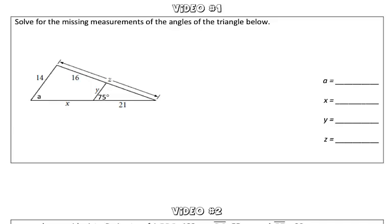In this problem, we are asked to solve for the missing measurements of the angles in the triangle below. What it doesn't tell you is that Y is representing the midsegment of this triangle.